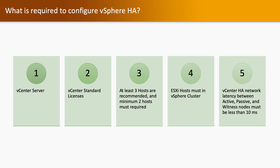What is required to configure vSphere HA? You need a vCenter Server and vSphere Standard licenses. At least three ESXi hosts are recommended, though you can enable HA with two. All ESXi hosts must be in a vSphere cluster, and you should have shared datastores and shared networking. Additionally, the vCenter HA network latency between the active, passive, and witness nodes must be less than 10 milliseconds.